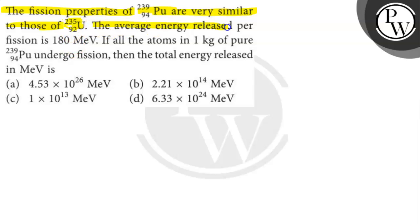The average energy released per fission is 180 MeV. If all the atoms in 1 kg of pure Pu-239 undergo fission, then the total energy released in MeV is what?